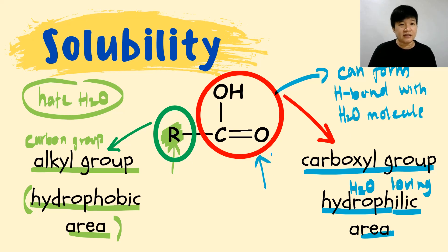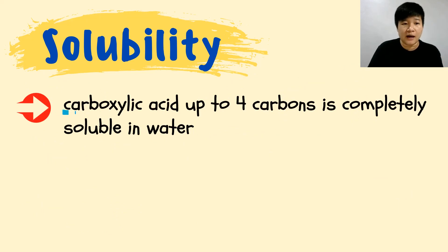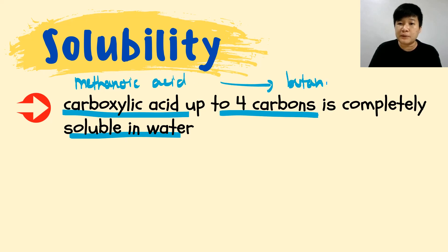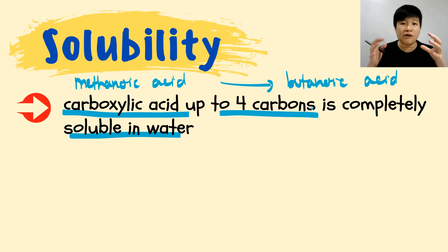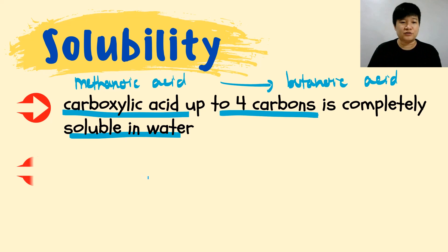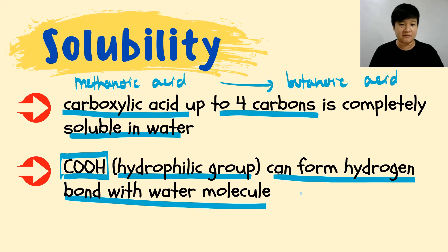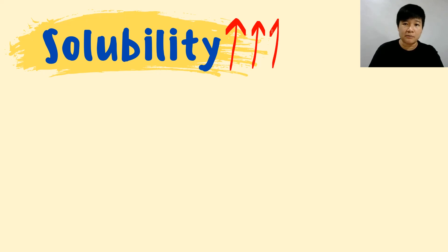This hydrophilic area is what dissolves in water. Now, carboxylic acids up to 4 carbons — from methanoic acid all the way to butanoic acid — are completely soluble in water, because the alkyl group is very small. The COOH group loves water and can form hydrogen bonds with water molecules.